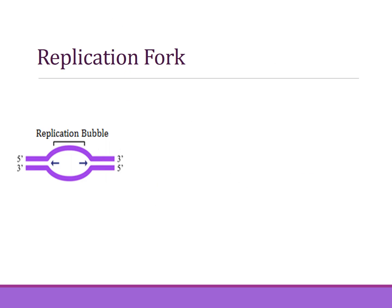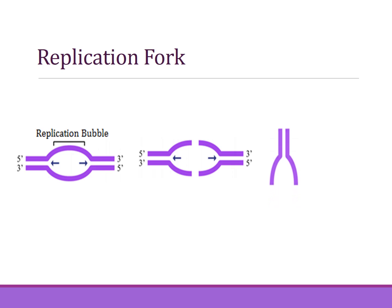Now we will discuss the replication fork. Visualize the replication bubble breaking into two halves, then turn one half by 90 degrees — the result is a structure called the replication fork, as seen in many textbooks. It is clear that DNA unwinding does not start from the endpoint of a DNA duplex as it may appear; it starts from the middle, and the replication fork diagram is used simply to make the topic easier to understand.